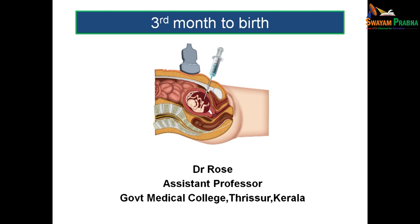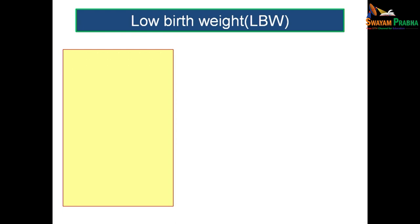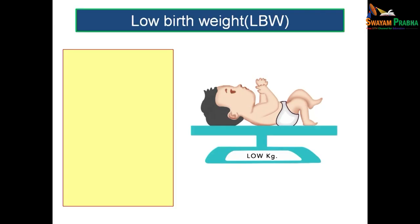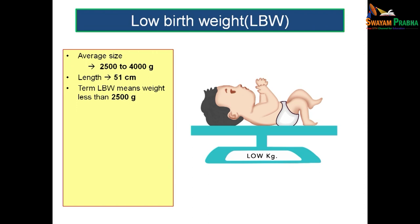In this session, we will be dealing with the development of the fetus from the third month of intrauterine period till birth. Before moving on to the topic, you might have heard the term low birth weight. The average weight of a fetus is from 2.5 kg to 4 kg and the length is about 51 cm at birth. Low birth weight means the weight is less than 2.5 kg.